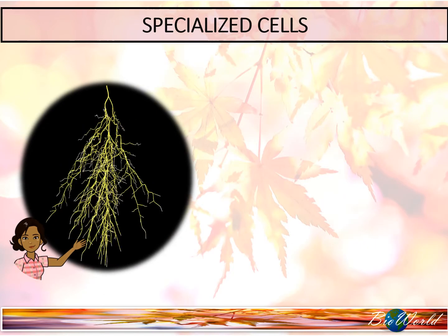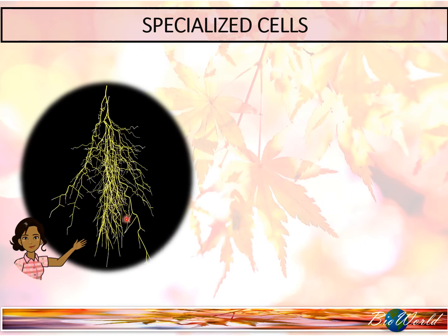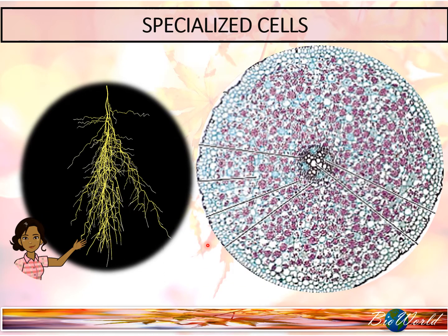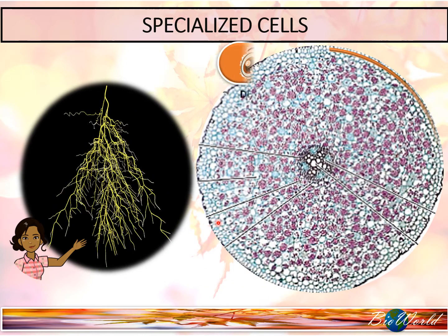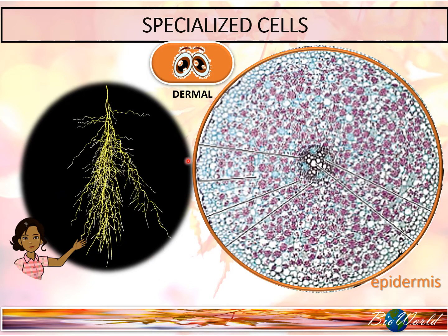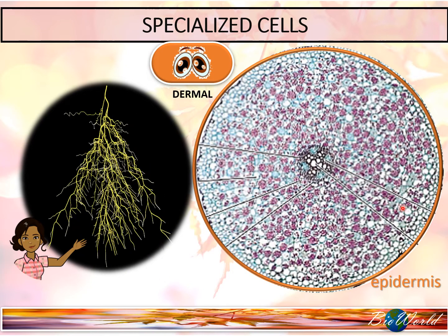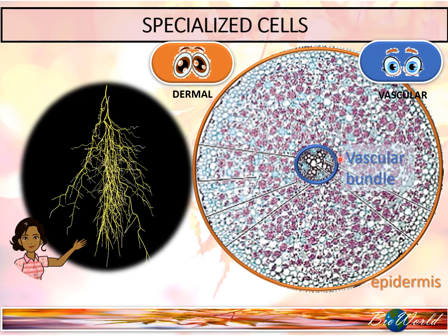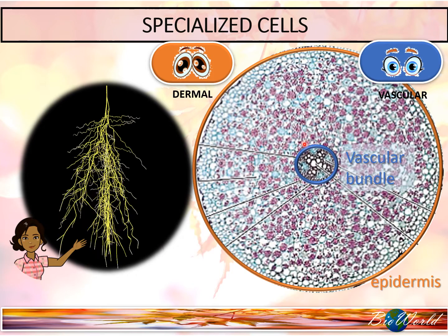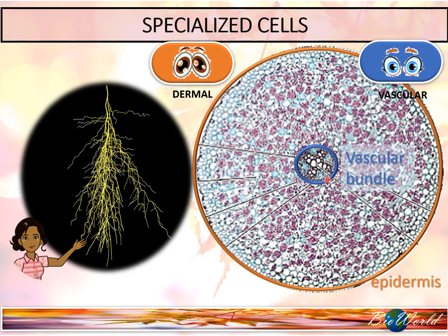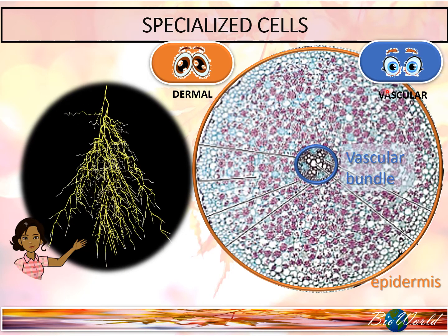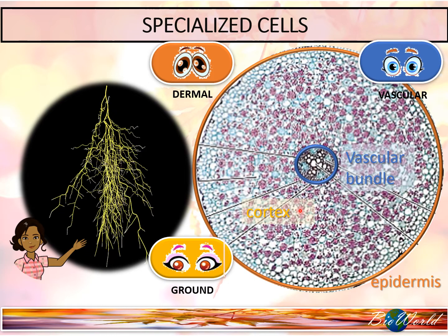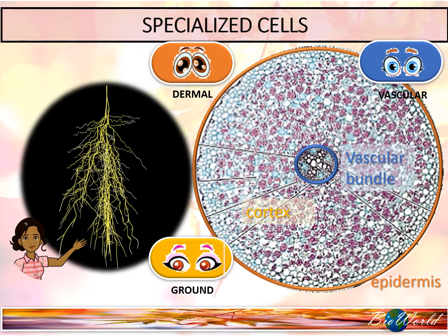Finally, we look at the cross-section of the root. Similar to the stem, the dermal tissues are found in the outermost layer — the epidermis. However, the vascular bundle is not arranged as a circle. Instead, it is at the center of the root, where you will find the vascular tissues, and the rest of the cells that make up the cortex will be ground tissues.